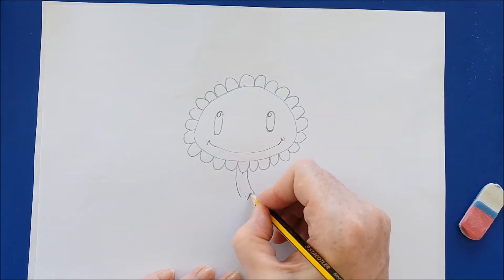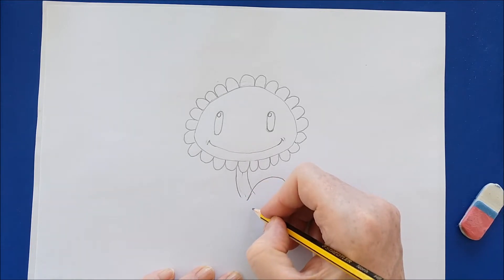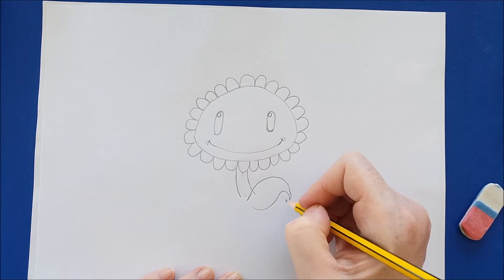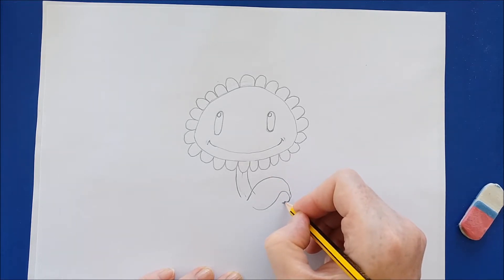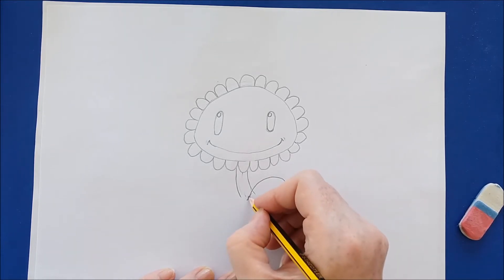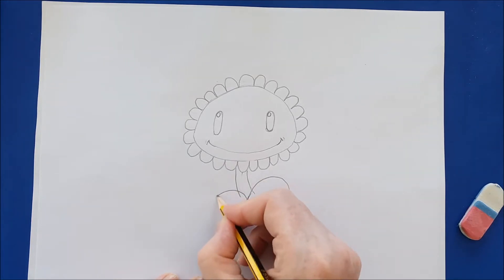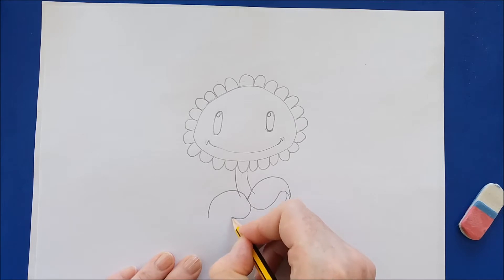The first leaf will do a big curve and then the second part of it is another curve that ends in a shape that sort of looks like an ocean wave. We're going to do the same thing on the other side. A big curve and then a curve underneath to end in a bit of an ocean wave.